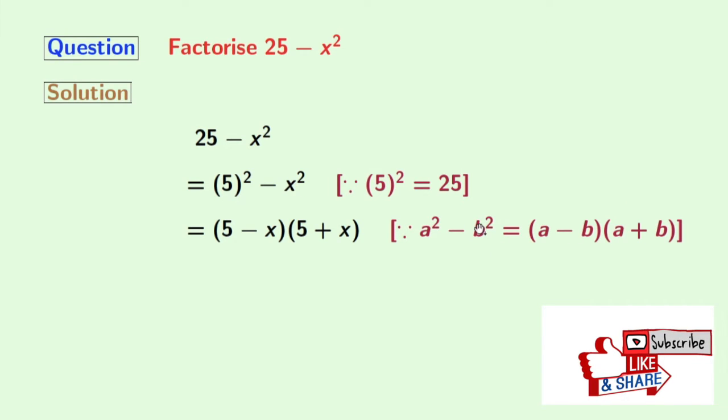In this expression, applying that, we get 5 whole square minus x squared is equal to 5 minus x times 5 plus x. Now we cannot factorize this further, so we will stop right now.